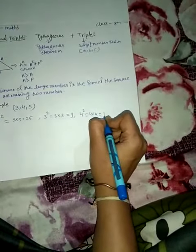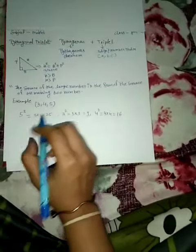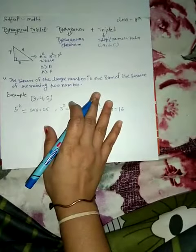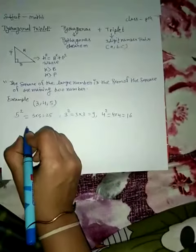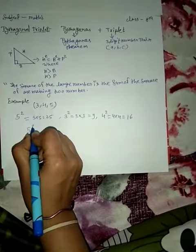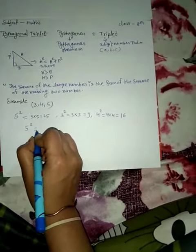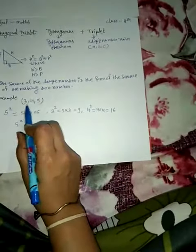When we discuss a Pythagorean triplet, that means the big number squared—that means 5 squared—is equal to the sum of squares of the remaining two numbers. So the remaining two numbers are 3 and 4, so square of 3 plus square of 4.